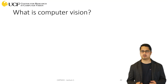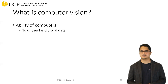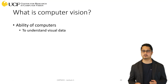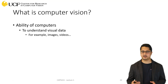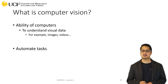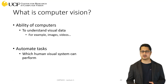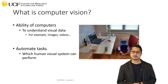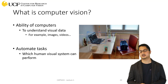Let's first try to understand what exactly is computer vision. Computer vision is the ability of computers to understand and interpret visual data. By visual data we mean images or videos where visual information is present, and with this visual information we want to automate some tasks which are actually very easy for the human visual system. For example, if we look at this image as a human we can easily say what different objects are present in this image.